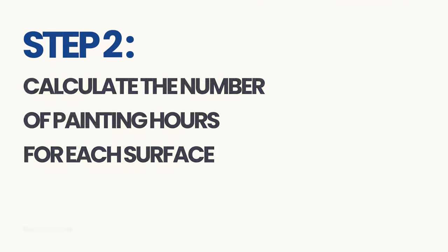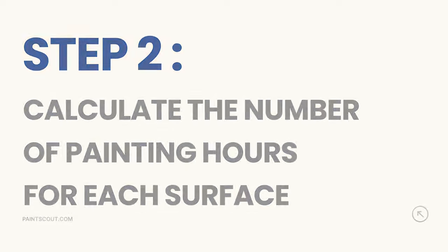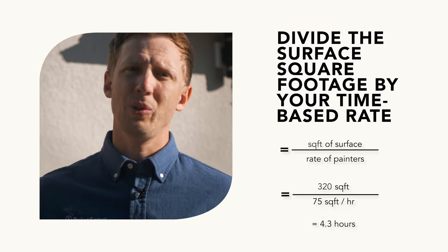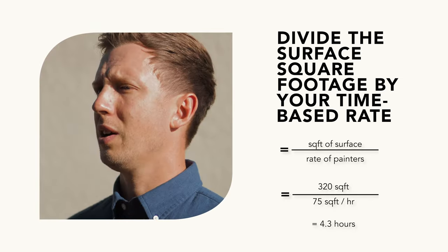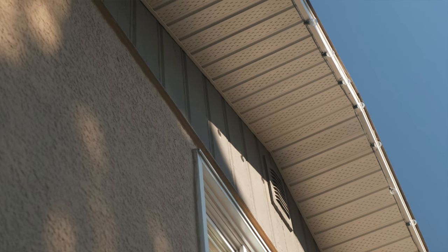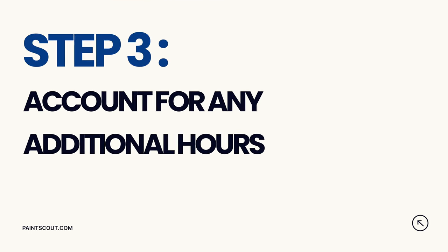Now that we have the measurements of this home and the surface we're working on, we can apply time-based rates to figure out how much time this house is going to take to paint the stucco two coats. In this example, we've got 320 square feet of stucco to paint, and we're going to use a rate of 75 square feet per hour to apply two coats of paint, because the stucco is a little bit harder to reach. So in this particular project, it's going to take us 4.3 hours to apply two coats of paint to the stucco. You may want to round it up or down depending on your comfort level, as many contractors do this to make it easy for their crew to produce. Once we have our total square footage, it's time to figure out how much prep work is needed and how much time it's going to take.